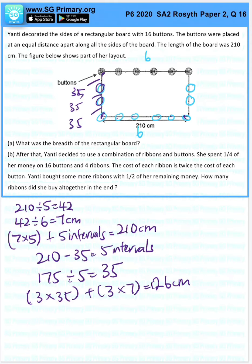Part B. After that, Yanti decided to use a combination of ribbons and buttons. She spent one quarter of her money on 16 buttons and 4 ribbons. The cost of each ribbon is twice the cost of each button. She bought some more ribbons with half of her remaining money. How many ribbons did she buy altogether in the end?